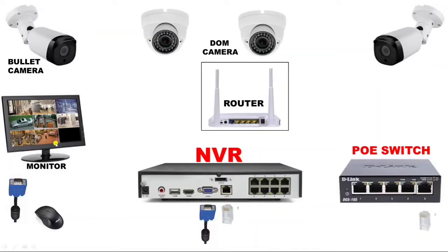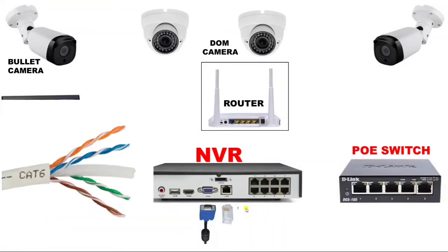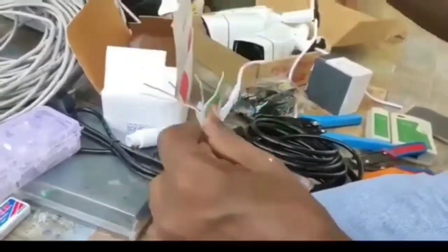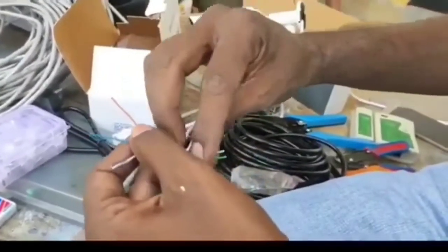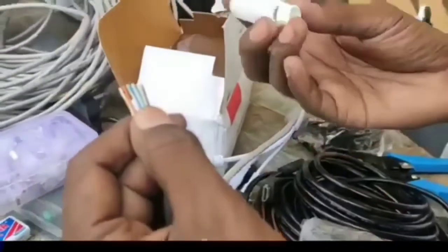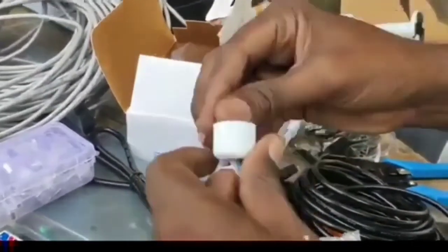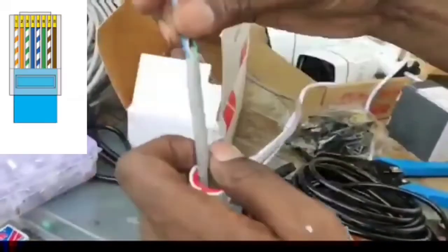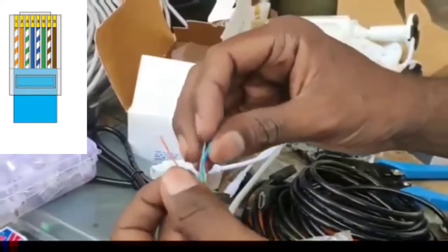For IP camera connection, we connect RJ45 connectors. We connect one RJ45 connector with the NVR and one RJ45 connector for the POE switch, for NVR to POE switch communication. For this RJ45 connection, we use CAT6 cable. In CAT6 cable, we have a total of four core pairs, giving eight wires total.